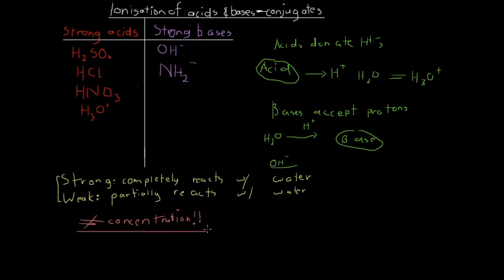You may be wondering what makes a strong acid and how to figure out whether an acid or base is strong or weak. We don't look at the concentration — we just look at the type of acid or base. There's a finite list of strong acids and strong bases. These strong acids completely react with water to produce lots of hydronium ions, and strong bases react completely to produce lots of hydroxide ions. Any acid or base not on this list is considered weak and will only partially react with water.